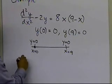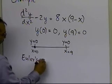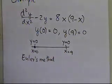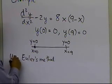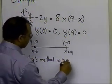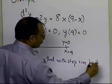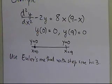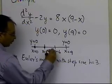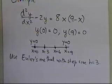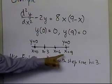Since it's a shooting method, we'll be asked to use some initial value problem method, such as Euler's method or Runge-Kutta second- or fourth-order method to solve it. To keep things simple, we're going to use Euler's method with step size h equal to 3. That means one step takes us to x equal to 3, the next to x equal to 6, and the next to x equal to 9 — three steps total from x equal to 0 to x equal to 9.